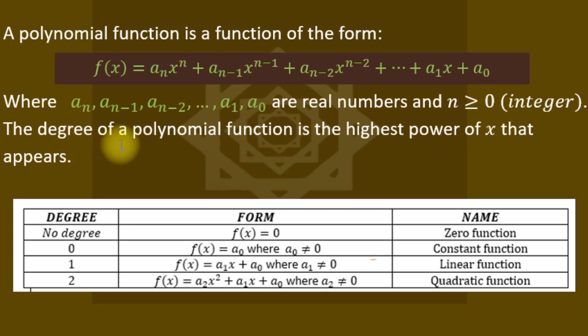The degree of any polynomial function is the highest power of x that appears. Looking at this table: the first row, f(x), has degree zero because what we have is a constant — a subscript 0 — which can be written as a₀ times x raised to power 0. The highest power is 0, so the degree is 0. But if it's just the zero constant, we have no degree.